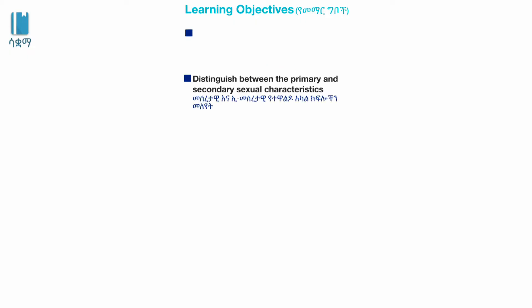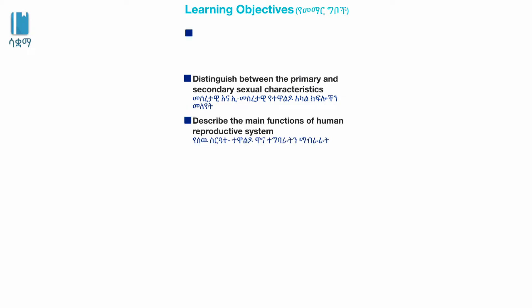Hello everyone, welcome to this video. We will distinguish the major structural components of the human reproductive system. We will also distinguish between the primary and secondary sexual characteristics. We will describe the main functions of the human reproductive system.